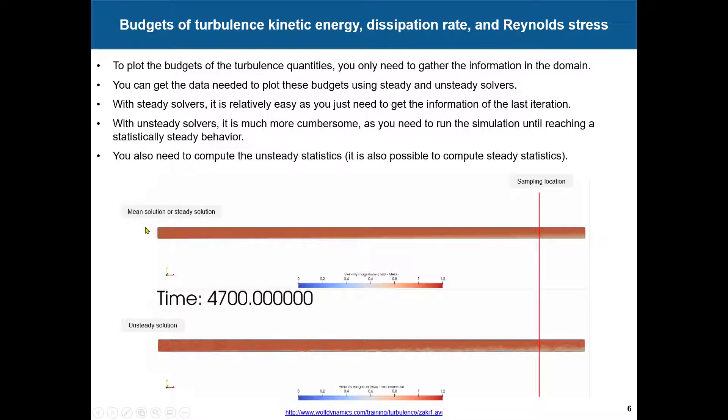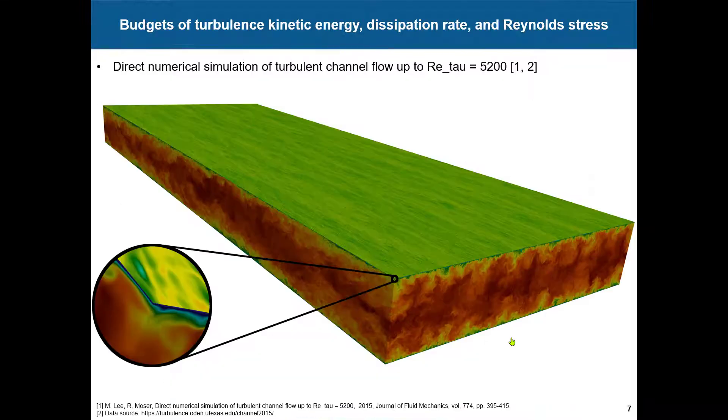See that you have, well, here we have a mean solution, just to show you mean solution and unsteady solution. So see that this is part of this statistic. So basically, this mean solution is the average of this. And here in this line or probes, you are sampling the information, everything that is passing there, you are sampling that information there that you are going to use to do all these plots, these budgets. And here you have the reference. This is a very nice data set. Remember that you have many data sets available online. This is very expensive to get it, or to get with this resolution.